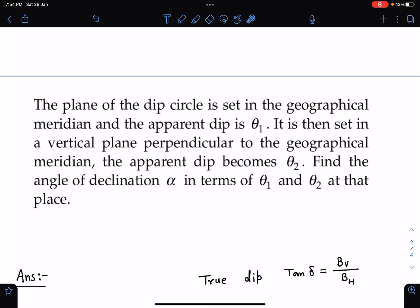The correct value of dip angle will come in the magnetic meridian, and they are saying that the apparent dip is θ₁. It is then set in a vertical plane perpendicular to the geographical meridian.